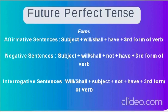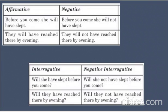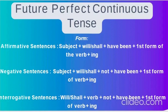Future Perfect Tense uses will/shall + have + V3. Affirmative: Subject + will/shall + have + V3. Negative: Subject + will/shall + not + have + V3. Interrogative: will/shall + subject + have + V3. Example: 'Before you come, she will have slept.' 'She will not have slept.' 'Will she have slept before you come?' 'Will she not have slept before you come?'